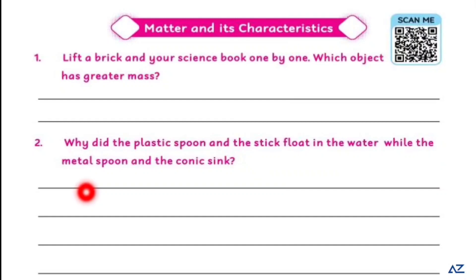The answer is: stick and plastic spoon are less dense than the water, so they float on the water. The metal spoon and coin are more dense than the water, so they will sink. Water ki density jitni light ya halki, it is floating on the water. And which is more dense than the water, like metal spoon or coin, it will sink in the water.